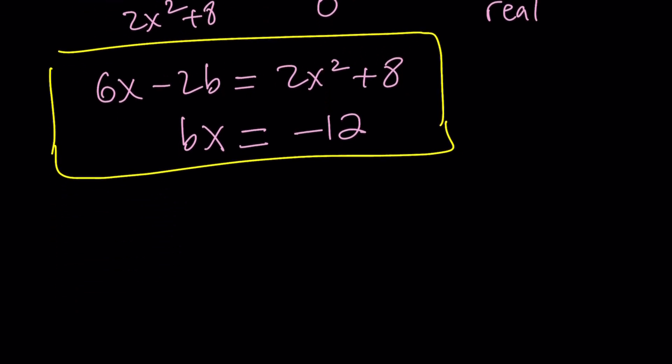Let's isolate one of the variables. Should I isolate b or x? If you isolate x, you're going to have to square a fraction. Or if I isolate b, it looks a little simpler. So let's isolate b here. We can write it as negative 12 over x.